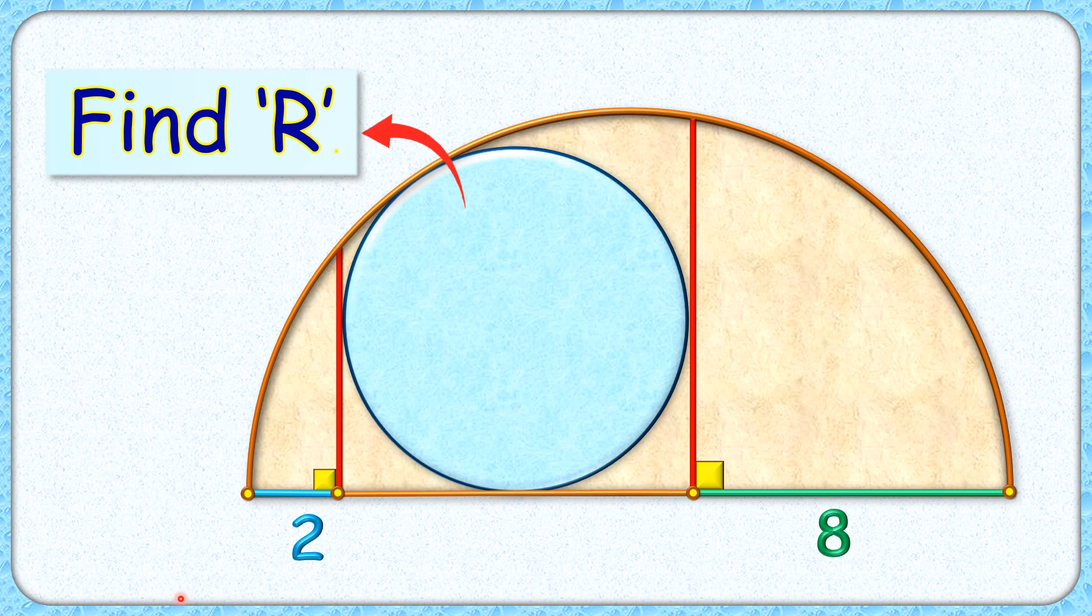Welcome everyone. This interesting question: we have a circle inside a semicircle. This red line segment—these are tangent to the circle and they are perpendicular to the diameter of semicircle. Length of this blue line segment and green line segment is given as 2 and 8 centimeters respectively. Exciting part is, with this limited data, we have to find the radius of this blue circle.